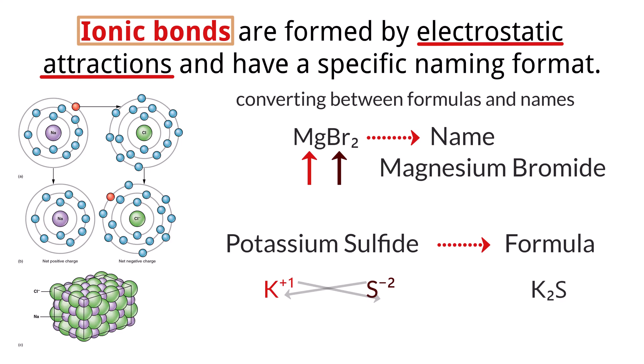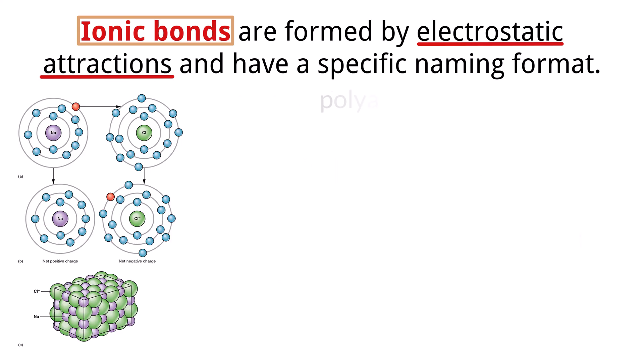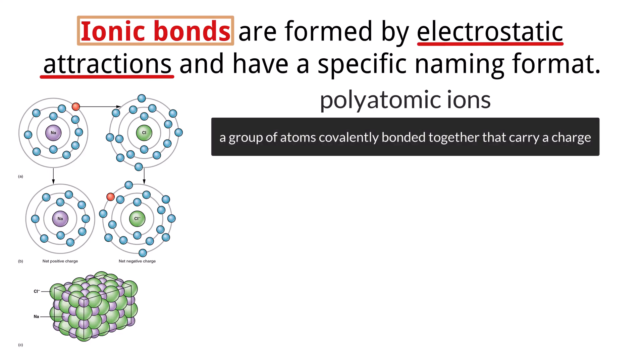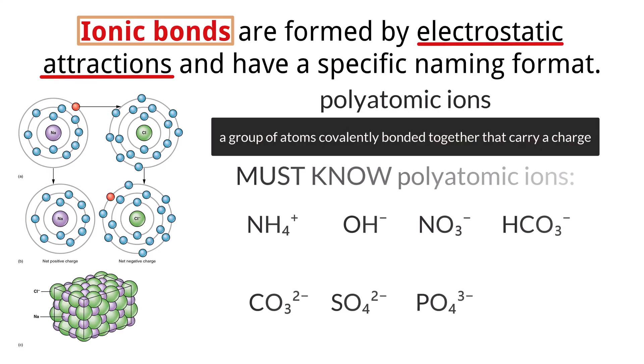While binary ionic compounds contain only two elements, polyatomic ions contain more than two. These are ions that consist of a group of atoms covalently bonded together and carry an overall electrical charge. With this charge, they can participate in ionic bonding with other ions. For the IB exam, and let's face it just for understanding chemistry in general, you need to know the names and charges of a few specific polyatomic ions.